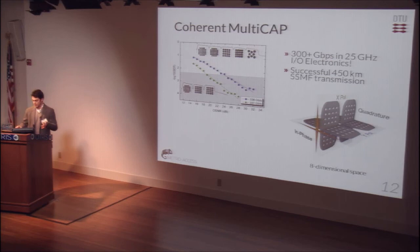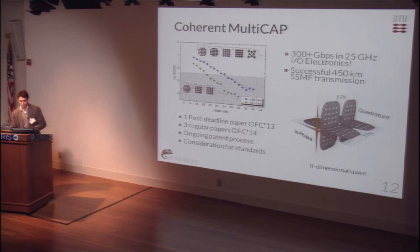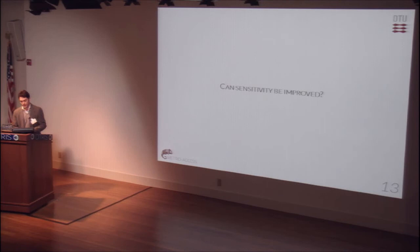The Multicap idea overall has given DTU one post-deadline paper, three regular papers at OFC 2014, one ongoing patent process, and consideration for standards. We are very proud of this and believe in its potential, but that doesn't mean we can't ask questions like: can sensitivity be improved? Because we know we are comparable in sensitivity to other options. In this case, the coding group came to help and decided to design a brand new forward error correction code for this — a product code FEC of 511 times 511, whose component codes for columns and rows were coded with BCH.